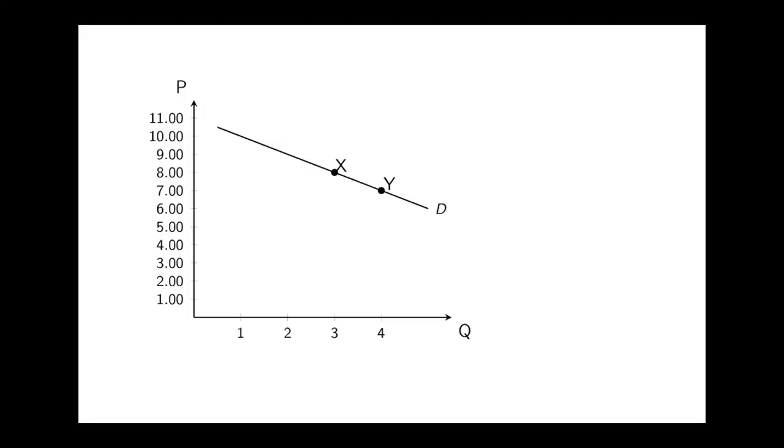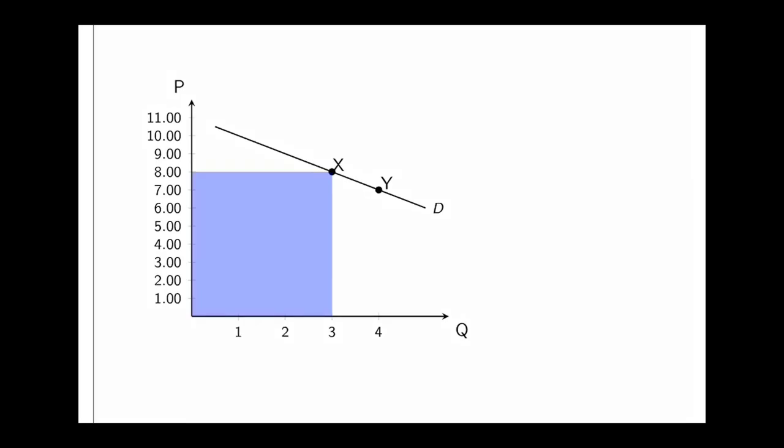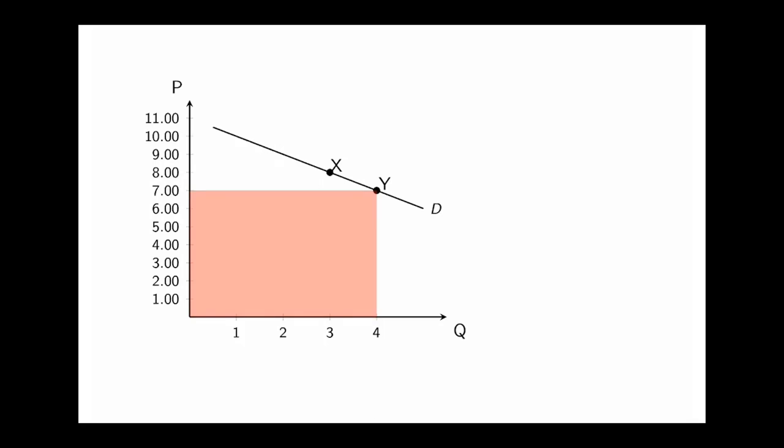Let's take these points x and y. x is at a quantity of 3 and a price of 8, so that means we would have a total revenue of 8 times 3. Point y is at a quantity of 4 and a price of 7, that means we'd have a total revenue of 28. You see that we lowered the price and the total revenue increased, so this is an elastic portion of the demand curve.